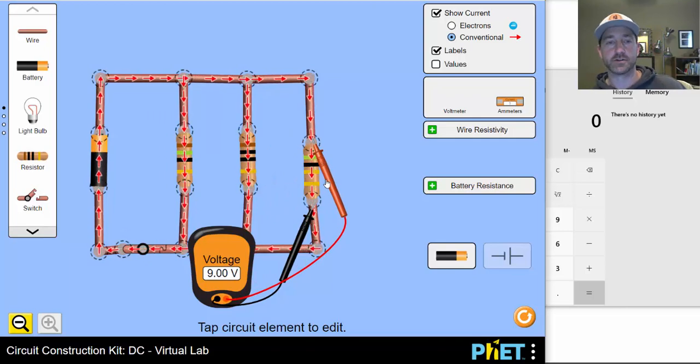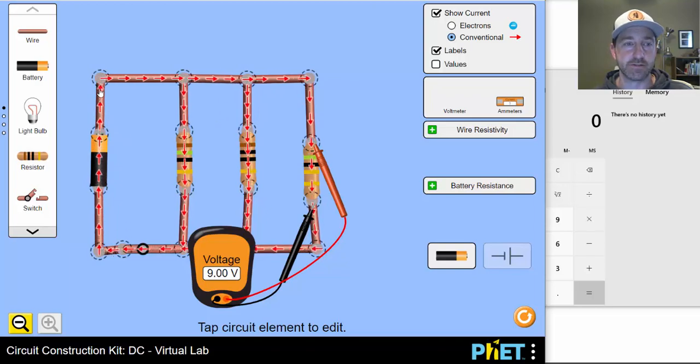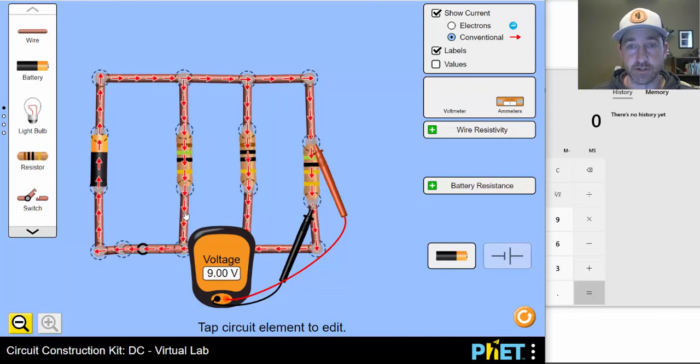So each resistor is hooked up directly to the battery. Each path has equal opportunity for the charge to move through. So whichever resistor it goes through, it has its full energy to use up. Each charge has 9 volts of electric potential when it enters that branch and uses up those 9 volts when it passes through the resistor.